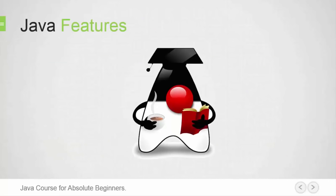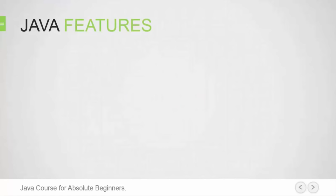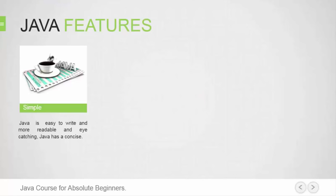Let's continue with the main Java features, also known as Java buzzwords. First: Simple. Java was designed with a small number of language constructs so that programmers could learn it quickly. It eliminates several language features available in C and C++ that are associated with poor programming practices or are rarely used — examples include goto statements, header files, structures, operator overloading, multiple inheritance, and pointers.